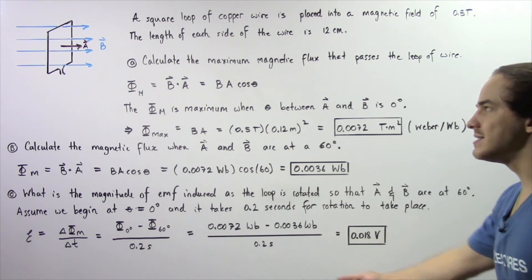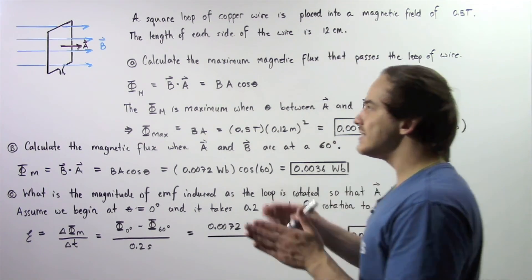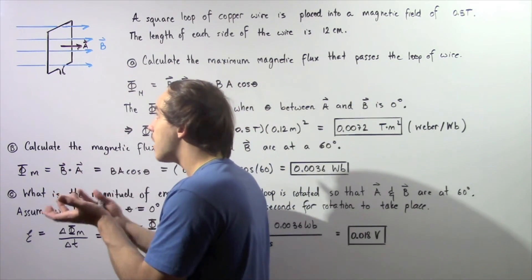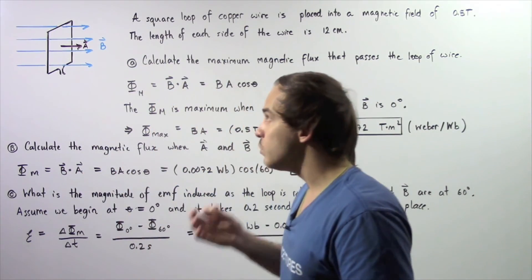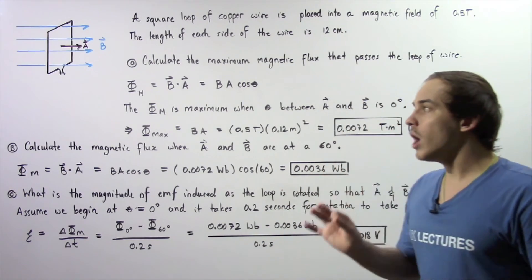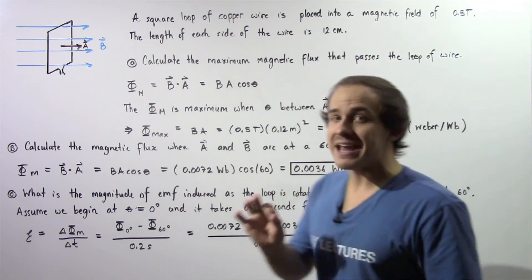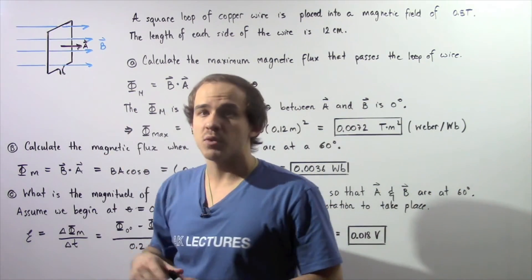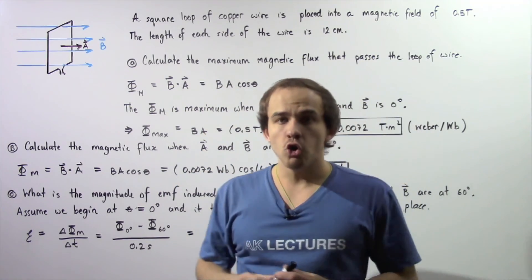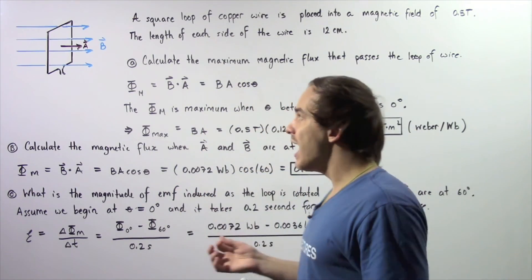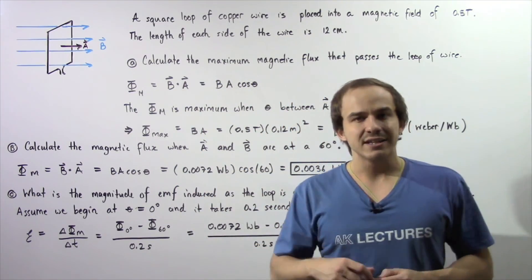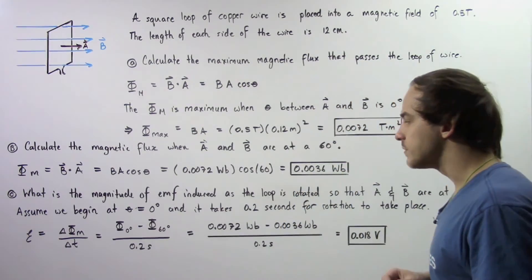So this is the quantity of EMF that is induced inside our copper wire. So now if we want to calculate what our electric current is that is induced inside our copper wire, we simply use our resistance of the wire and Ohm's law to calculate our electric current.